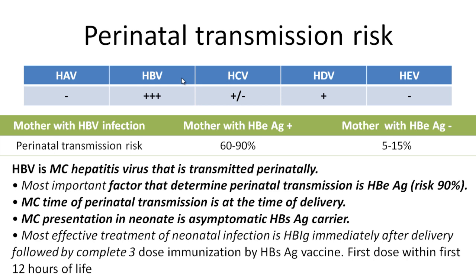Regarding perinatal transmission, hepatitis B carries the maximum risk. If the mother is HBe antigen positive, the risk is up to 90%; if HBe antigen negative, the risk is only 15%. Hepatitis B is the most common hepatitis virus transmitted perinatally, and the most common time of transmission is at delivery or during labor. In neonates, who are immunosuppressed, the most common presentation is asymptomatic carrier state.